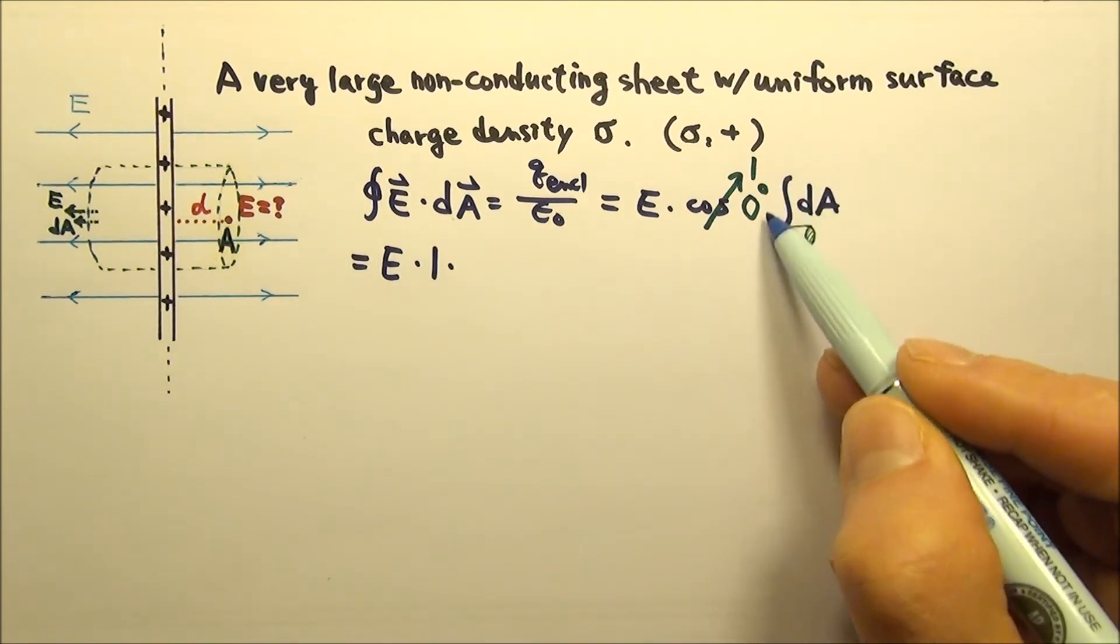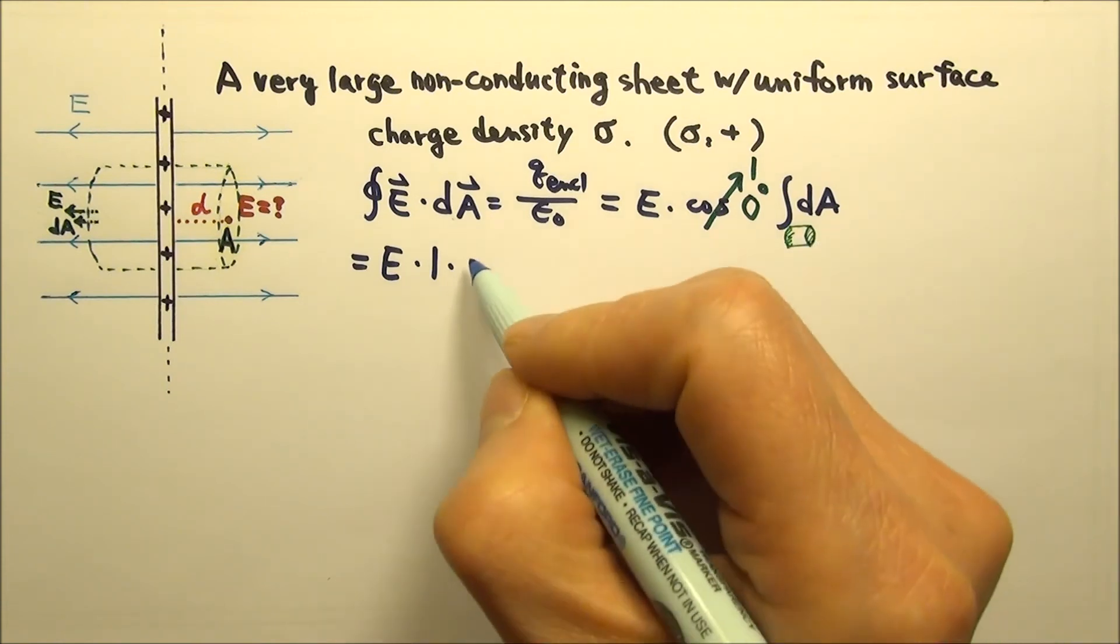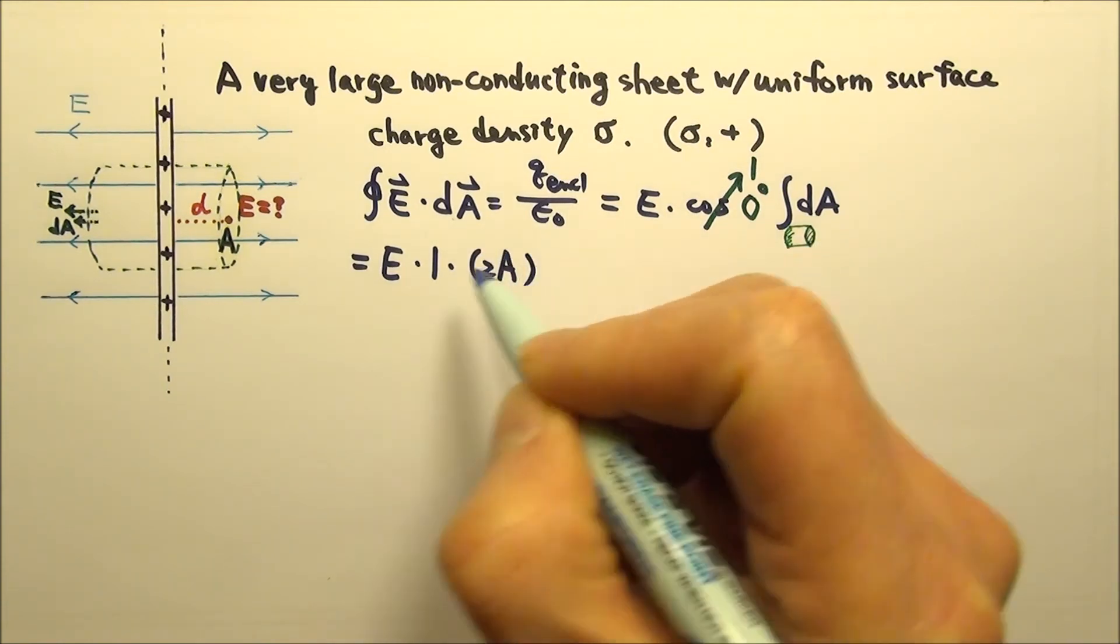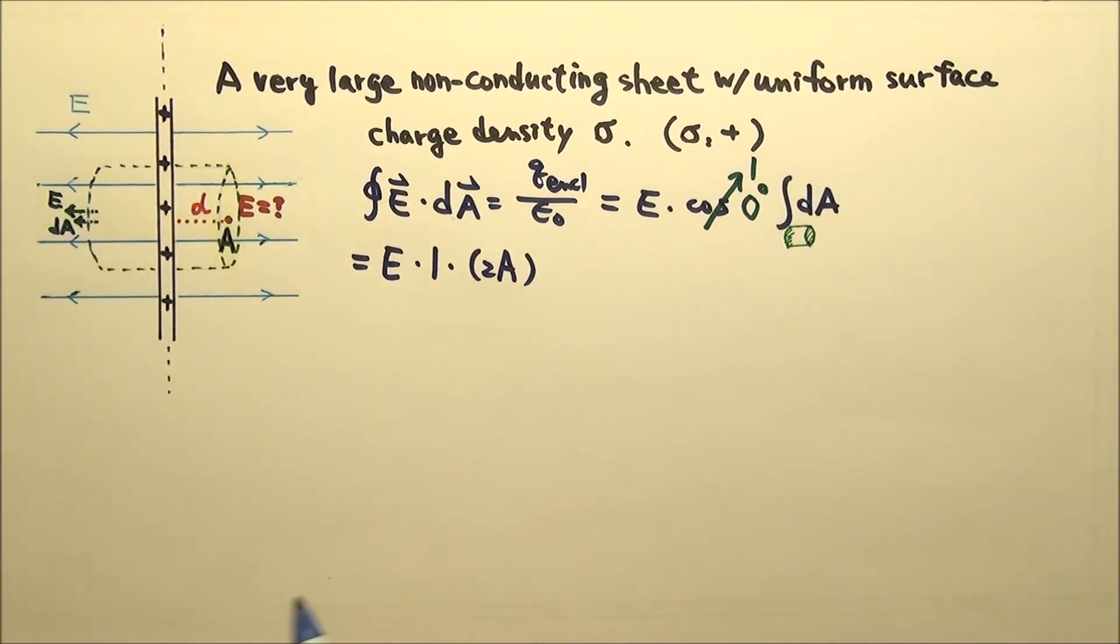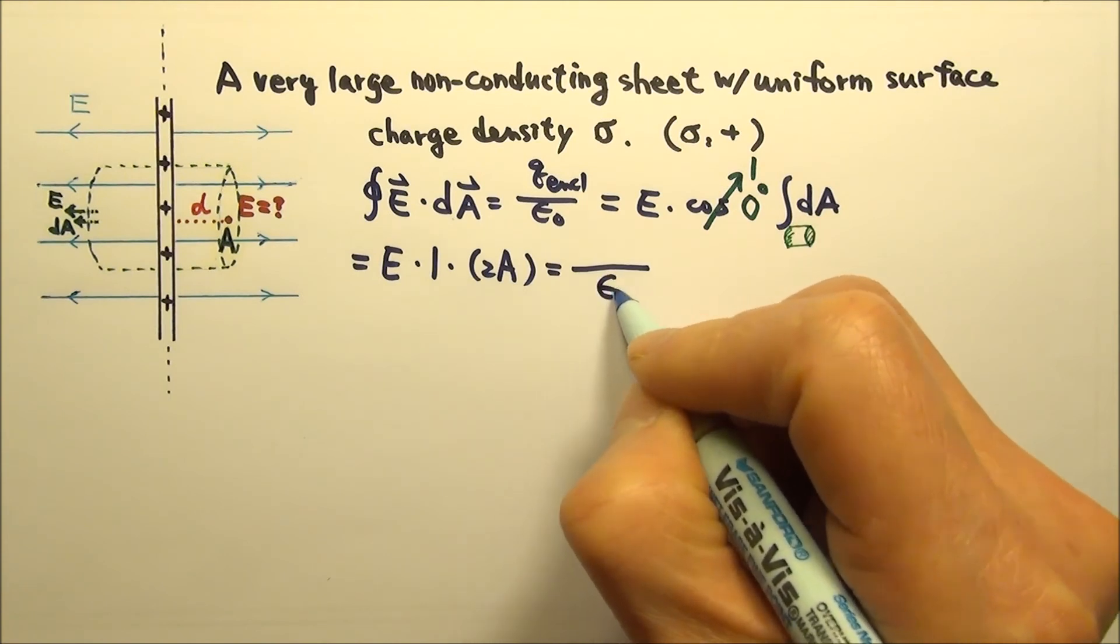So the flux equals to E times 1 times, what's the area when we add up the area of the two ends together? We get 2A, because it's A on this side and A on that side. And this also equals to Q enclosed over epsilon 0.